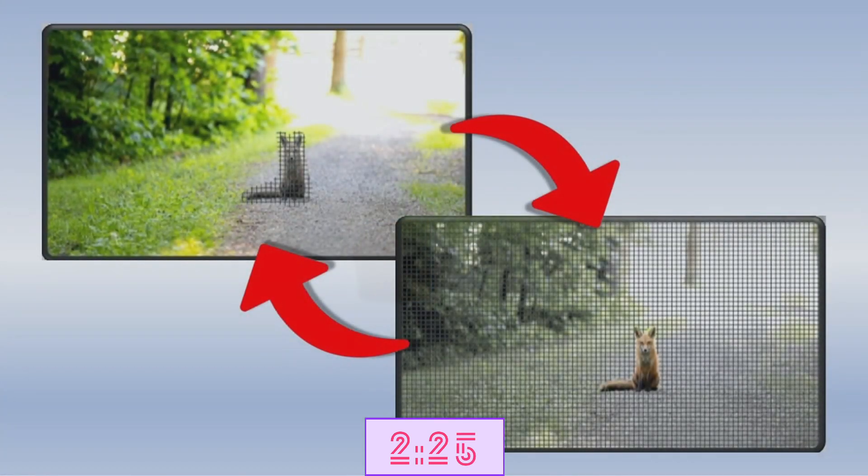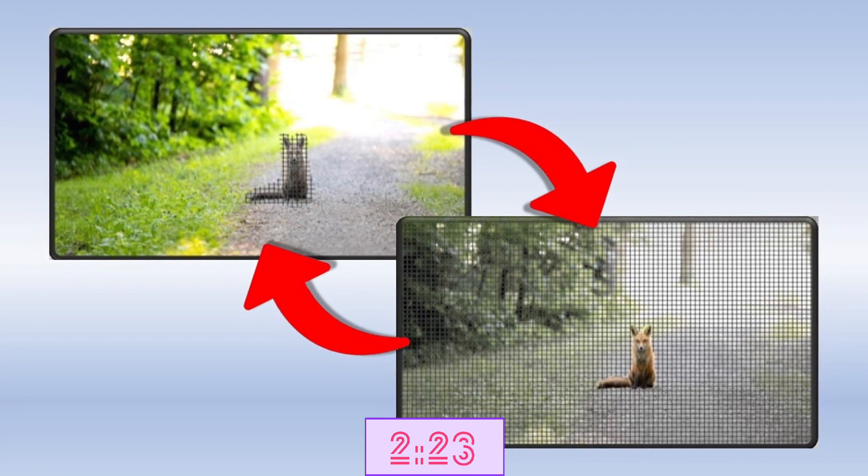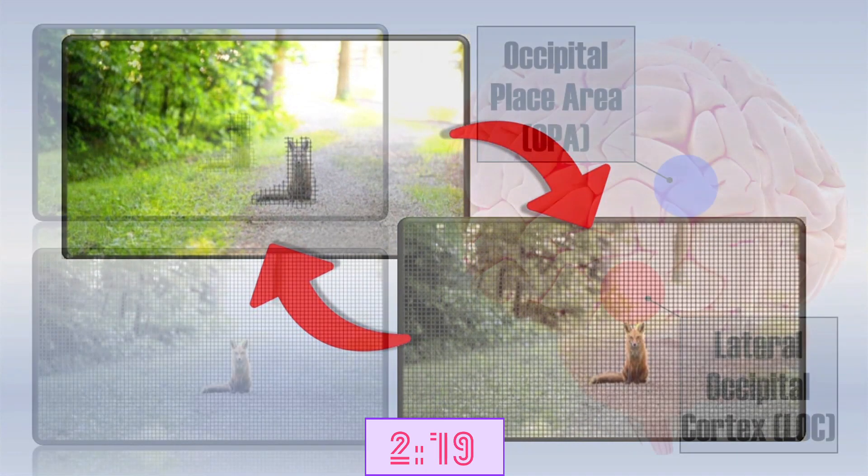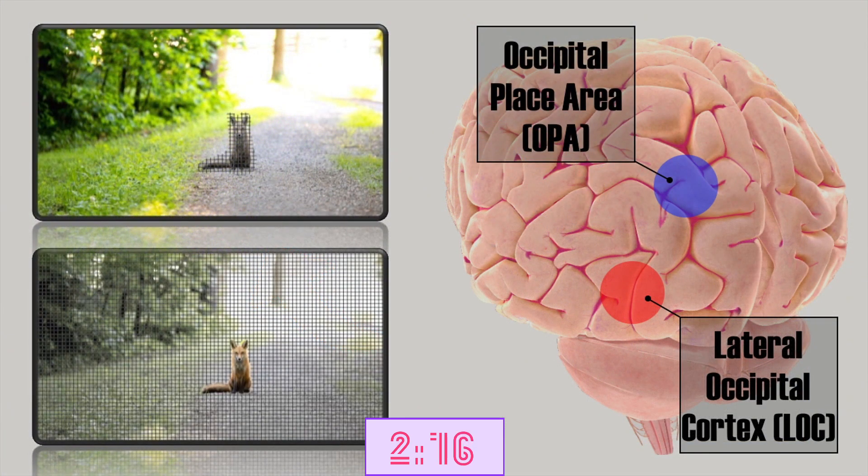This means that at some point visual information about an object within our focus and the background needs to be integrated. Two candidate brain regions are the lateral occipital cortex, abbreviated as LOC, and the occipital place area, abbreviated as OPA.